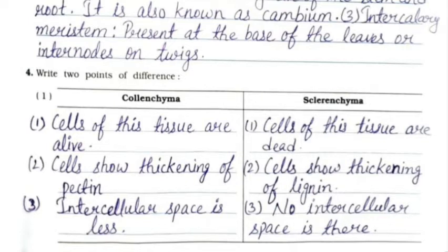Question 4: Write two points of difference between colenchyma and sclerenchyma. Cells of colenchyma are alive while cells of sclerenchyma are dead. Colenchyma cells show thickening of pectin while sclerenchyma cells show thickening of lignin. Intercellular space is less in colenchyma and there is no intercellular space in sclerenchyma.